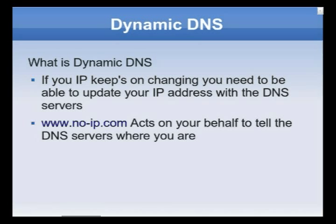With Dynamic DNS, we can use a service like noip.com, register with them, and use an update client to update our IP address with them. So every time someone goes to clumont.zapto.org, which I've got from noip.com, noip registers it with the DNS servers around the world, telling them to ask noip.com where it is. When the DNS servers ask, it responds with the current IP address, such as 121.33.48.6, whatever it might be.